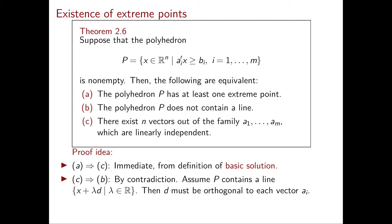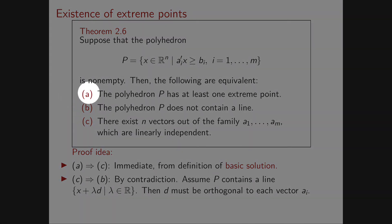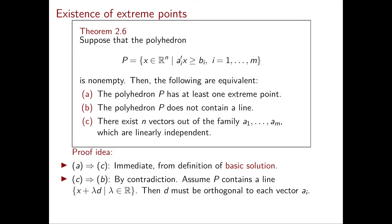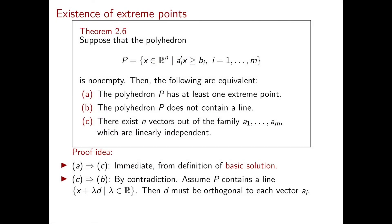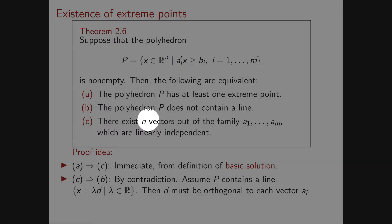Let's sketch the proof. We prove A implies C, then C implies B, then B implies A. For A implies C: this direction is trivial — we just use the definition of a basic solution. From A, P has at least one extreme point, hence at least one basic feasible solution. In every basic solution there are n linearly independent active constraints, so in particular there are n linearly independent vectors among a1, …, am.